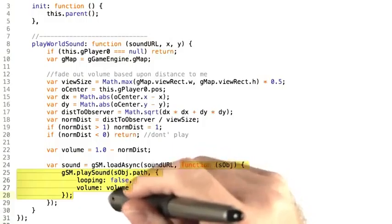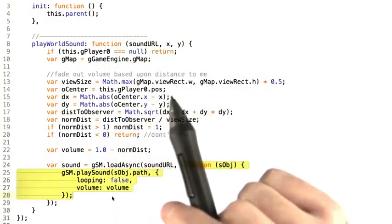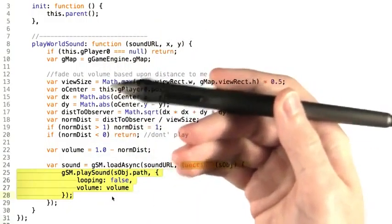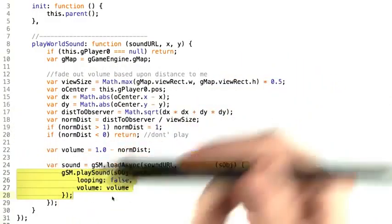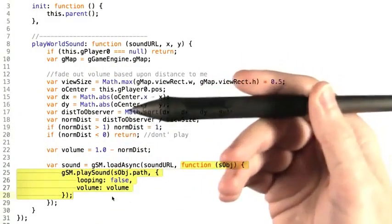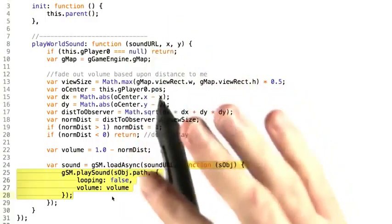So once this function is written, we'll have a nice effect where the further a sound is away from a player, the more quietly it's played until the player can't hear it at all, creating a more realistic sound environment.